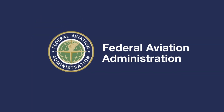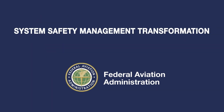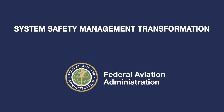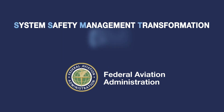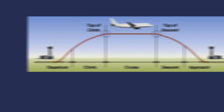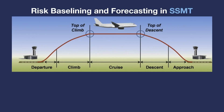The FAA's System Safety Management Transformation, or SSMT, program addresses critical and emergent safety issues to reduce civil aviation-related fatalities and serious injuries. The program uses safety risk assessment models to help us analyze how accidents and incidents might occur and to prevent them from happening in the future.